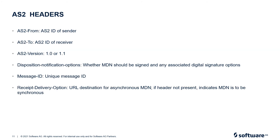Here are some of the AS2 headers. 1. AS2-From: identifies the AS2 ID of the sender. 2. AS2-To: identifies the AS2 ID of the receiver. 3. AS2-Version: 1.0 or 1.1. 4. Disposition-Notification-Options: whether MDN should be signed and any associated digital signature options. 5. Message-ID: unique message ID. 6. Receipt-Delivery-Option: URL destination for asynchronous MDN — if the header is not present, it indicates MDN is to be synchronous.